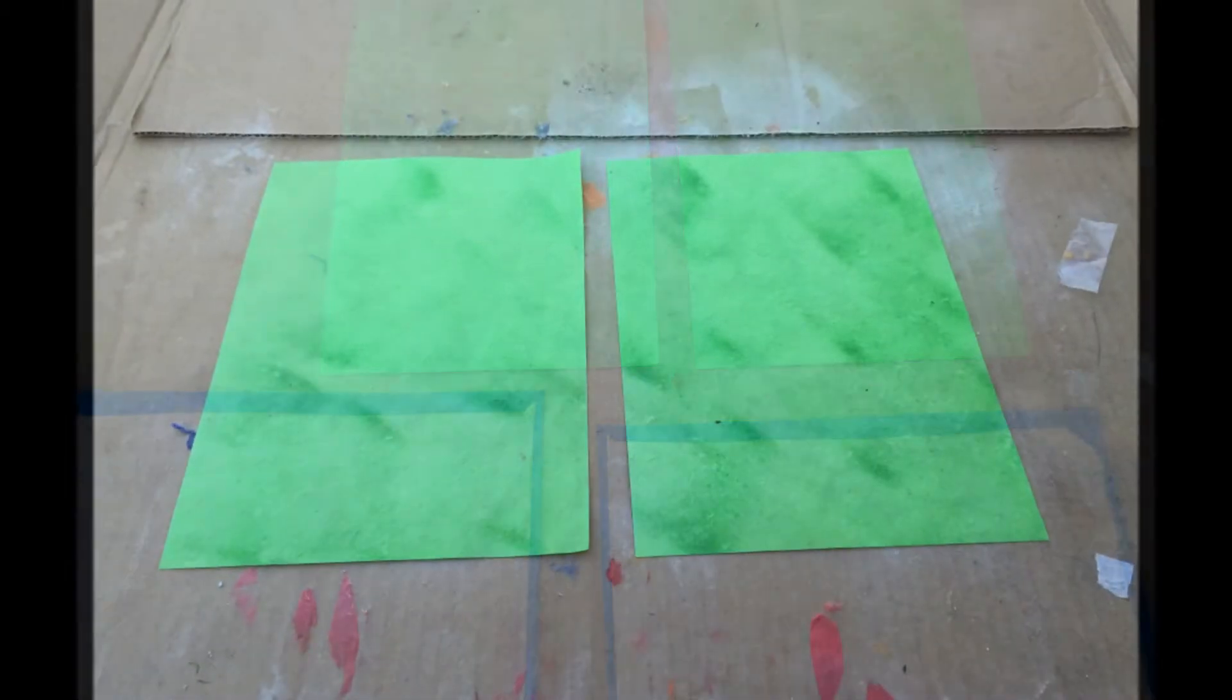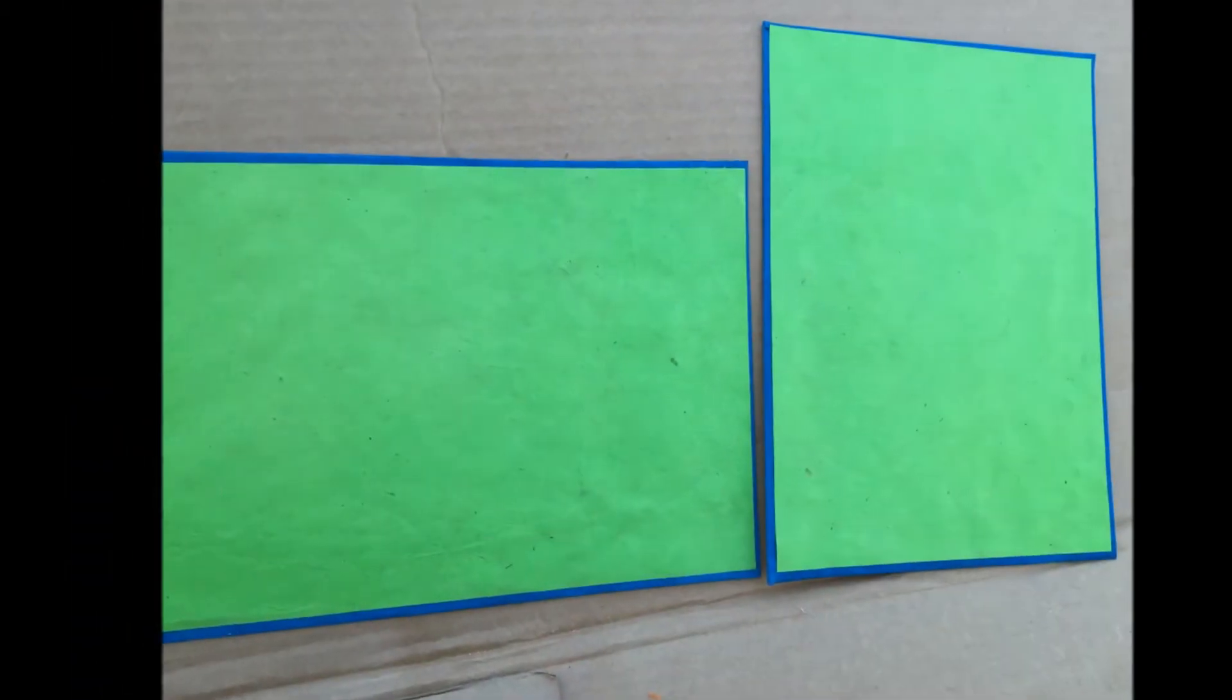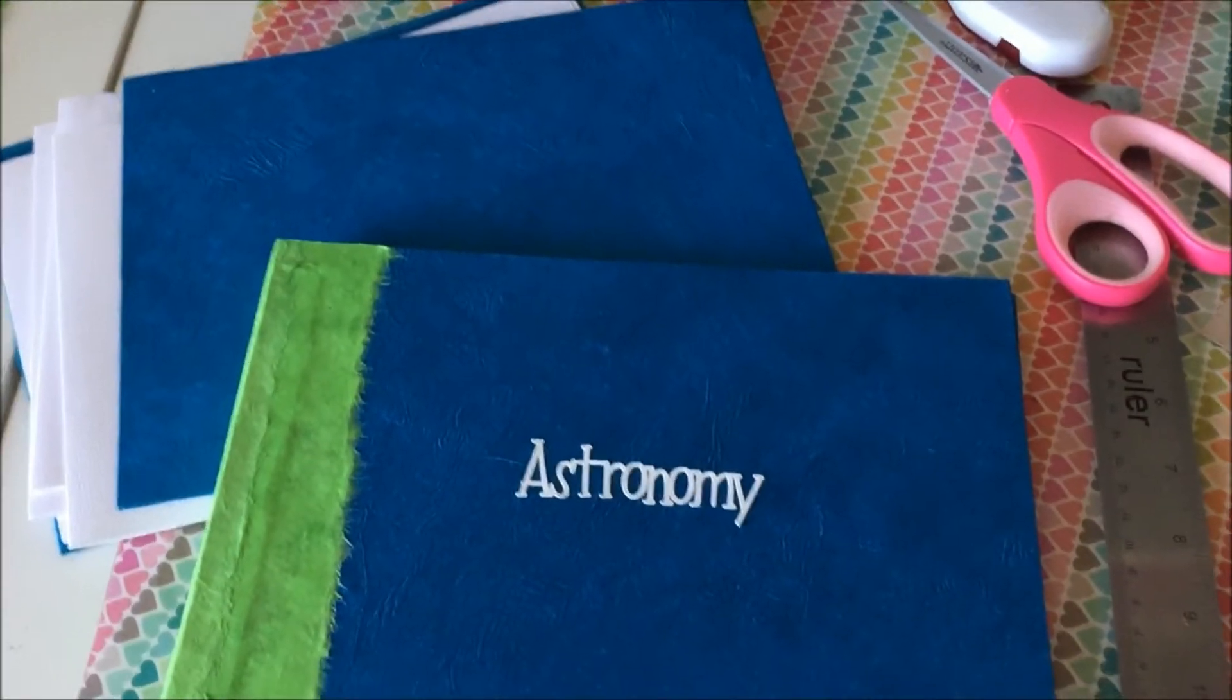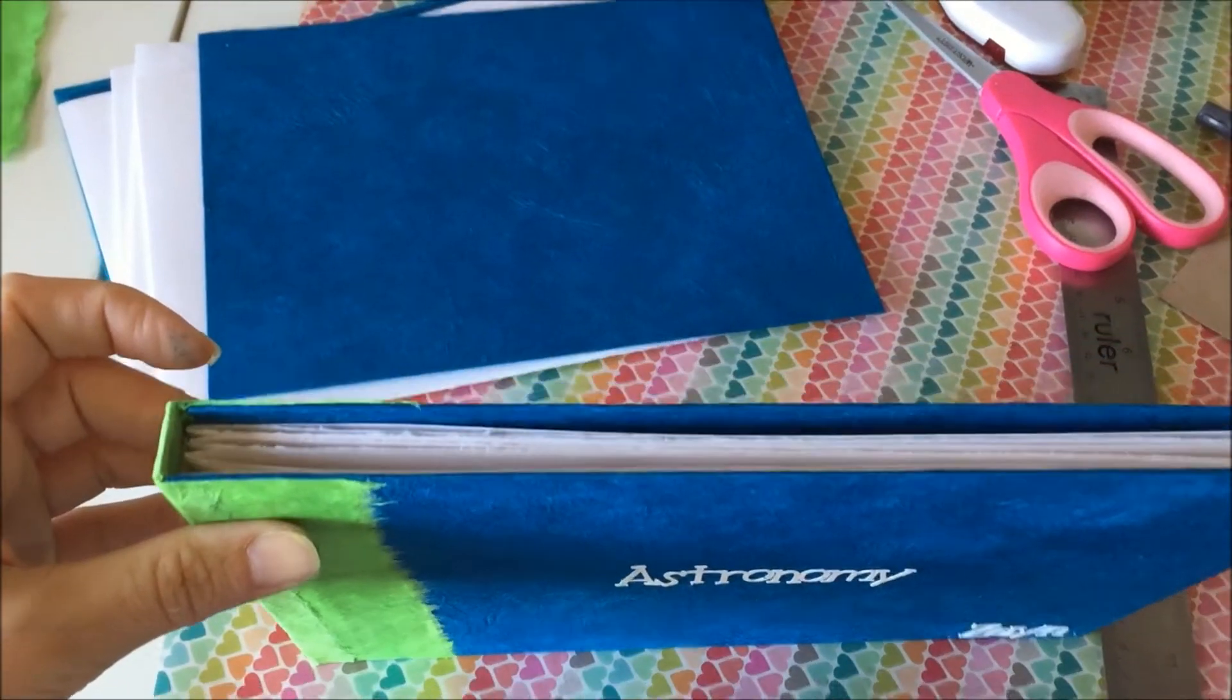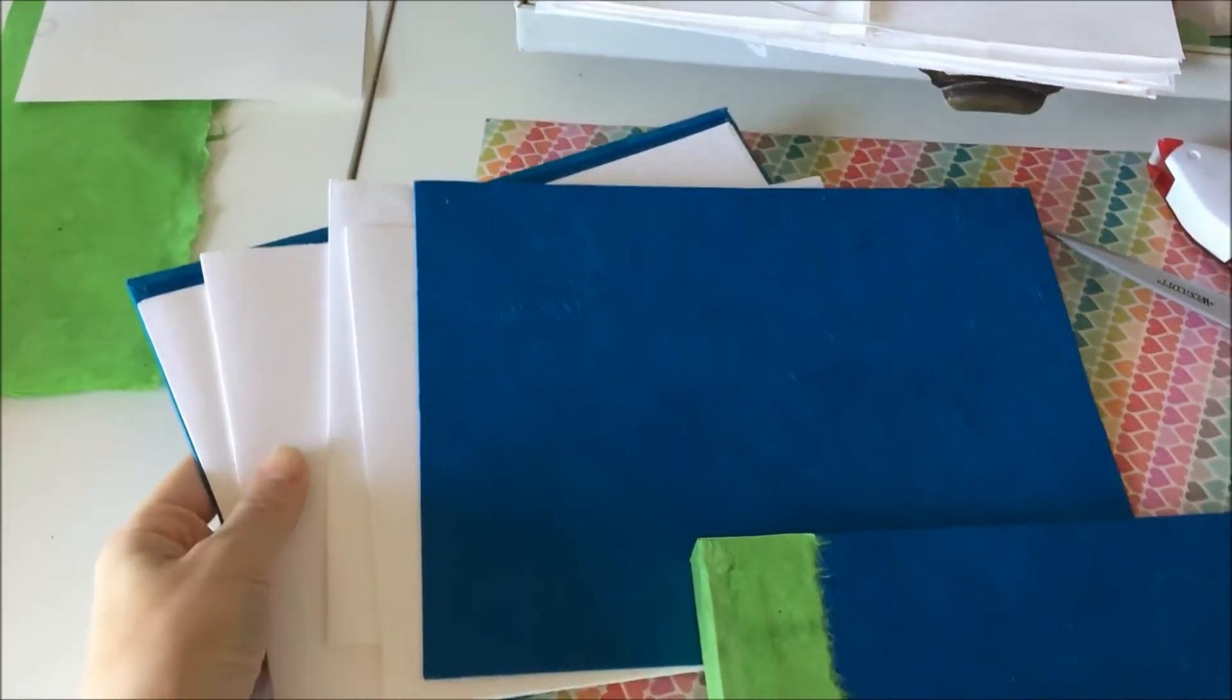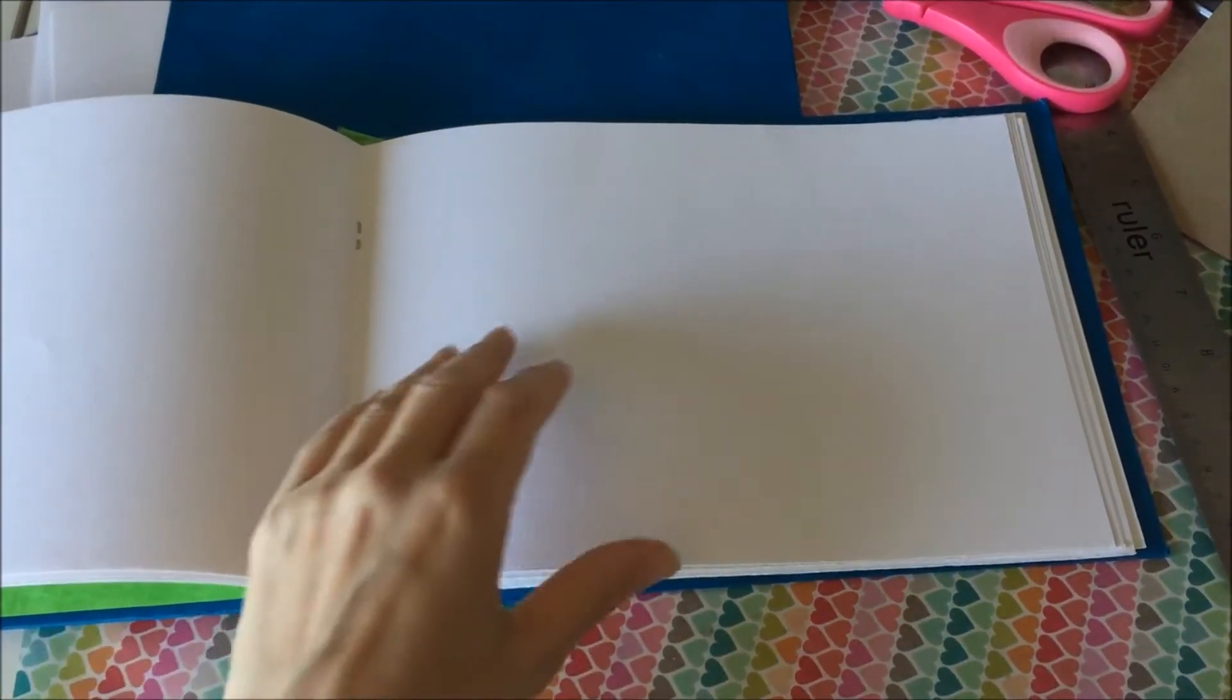And then I used some of this bright green for the interior pieces of the book. So here's the book kind of half-assembled. And here are some of the bits that are going to get stapled into the book. And it's all blank right now, and I think I have four signatures in there that I stapled to the spine.